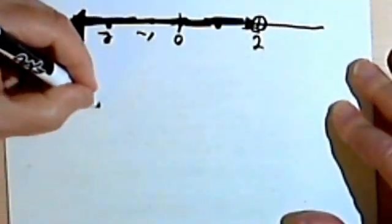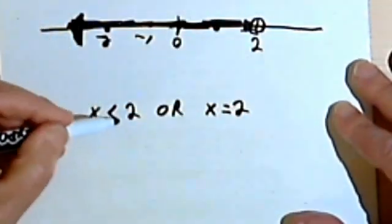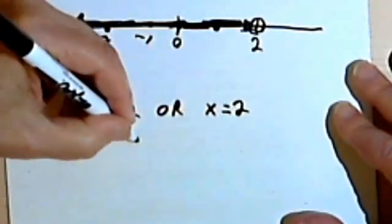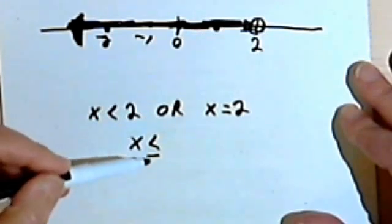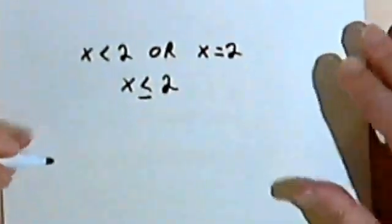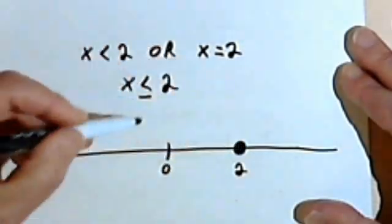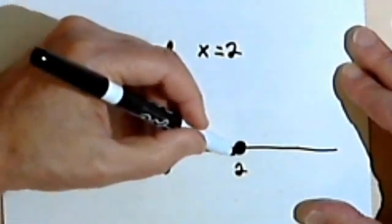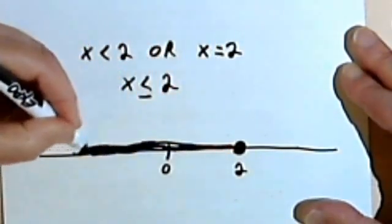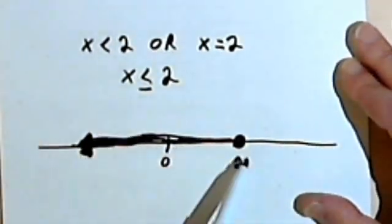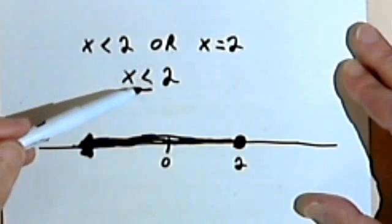Just as before, maybe I've got a situation where x is less than 2, or x is equal to 2. I can combine the less than and the equal to symbols into x is less than or equal to — I've got the less than sign with part of the equal sign combined together. On the number line, here's the place where x equals 2, and everywhere along here — 1, 0, negative 1, and so on — x is less than 2. So a heavy line and a filled-in circle is how I express the inequality x is less than or equal to 2.